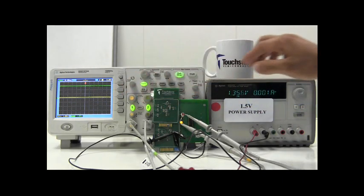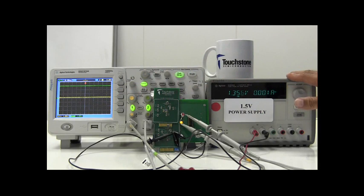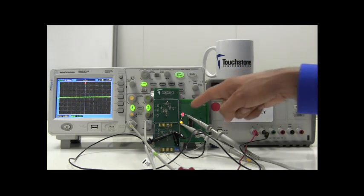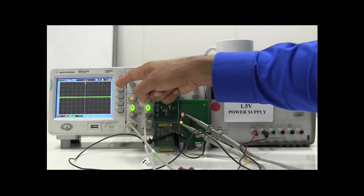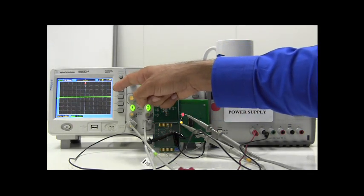If I now drop the voltage down further to approximately 1.288 volts, you can see how the red LED turned on and now both outputs are at a low state at approximately 0 volts.